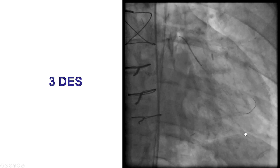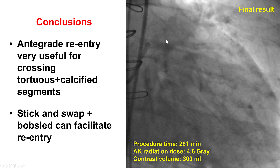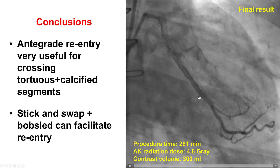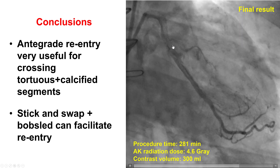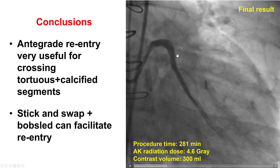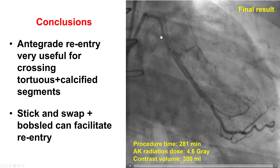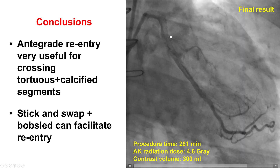After this, the Pilot was exchanged for a workhorse guide wire and drug-eluting stents were placed all the way from the obtuse marginal to the ostium of the left main, providing a nice final result with TIMI flow into the first obtuse marginal. Interestingly, an earlier small marginal branch actually remained patent despite the dissection re-entry technique used for recanalizing the vessel.